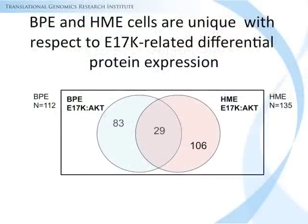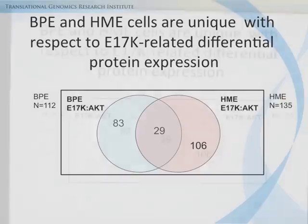Our differential proteomics analysis in HME and BPE cells demonstrated unique differences between E17K and wild-type AKT1. We also showed a strong propensity for differentially expressed proteins to be downregulated in E17K cells. My colleague at TGen, Dr. Costas Petritens, who is also co-author on the paper, will now describe the differential proteomics approach we used in our study.